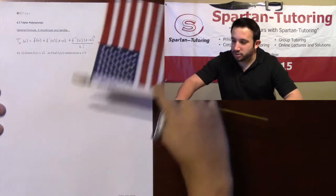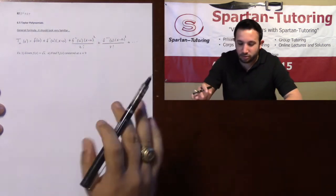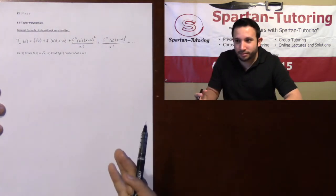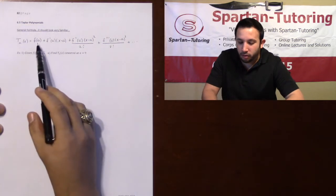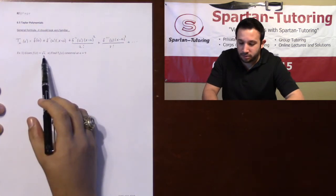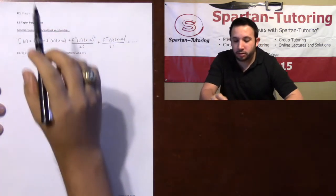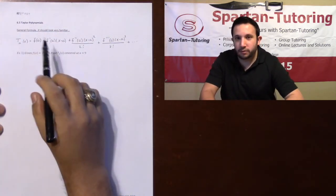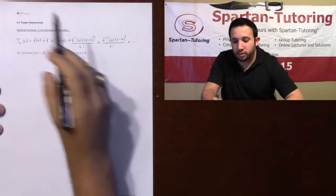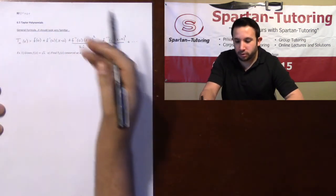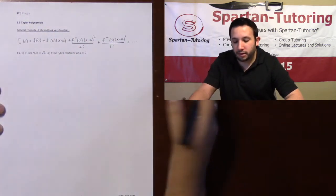All we got to do, these are really cool, I'm excited about this because they're really not too bad. What you're going to do is you're going to be given a function, you're going to be given an a value, and if you want a first degree Taylor polynomial go to the first derivative. You want a second degree Taylor polynomial, go to the second derivative, third degree, third derivative, and so forth.